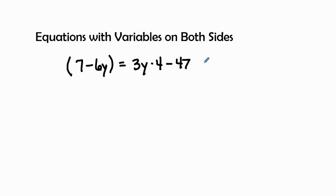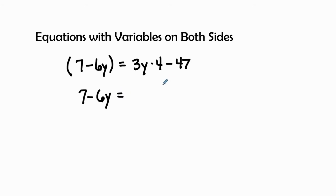In this video we'll be continuing our practice of solving equations with variables on both sides. In this example we have the quantity of 7 minus 6y equal to 3y times 4 minus 47. We first need to look at getting rid of our parentheses and seeing if we can combine anything inside. Since we have a coefficient with a variable and a constant, there's nothing to combine, so we're just going to get rid of the parentheses and rewrite 7 minus 6y.